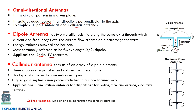The collinear antenna consists of a series or array of dipole elements arranged parallel to each other, one after another, passing through the same straight line — that is the meaning of collinear. This type of antenna has high gain, meaning the same power is radiated in a more focused way. These antennas are used in base stations for dispatchers — police, fire, ambulance, and taxi services.